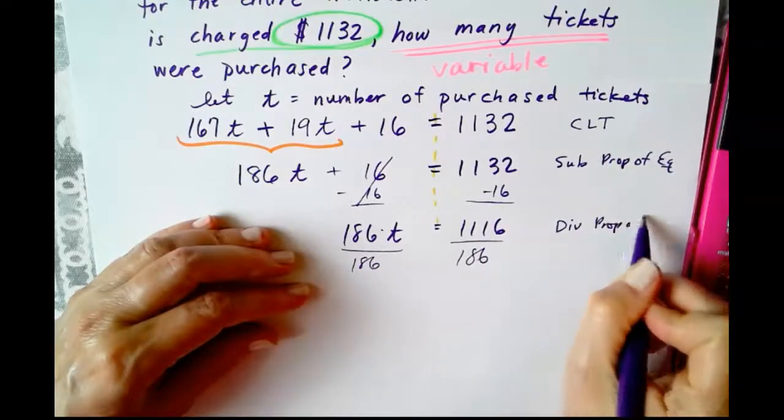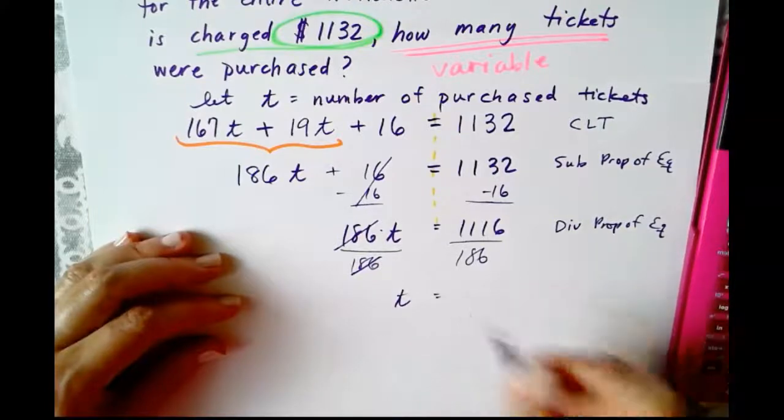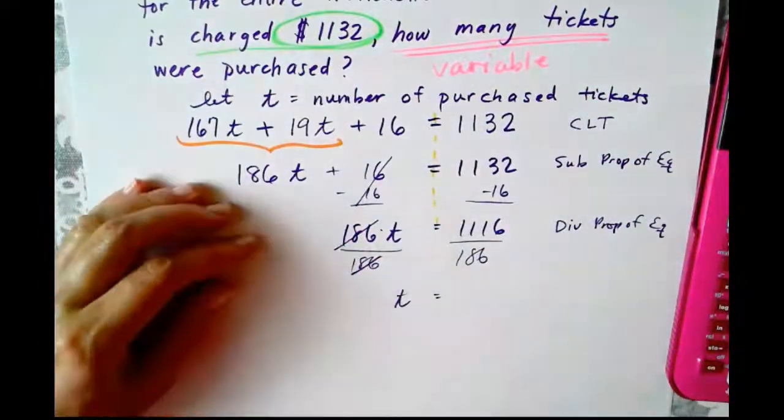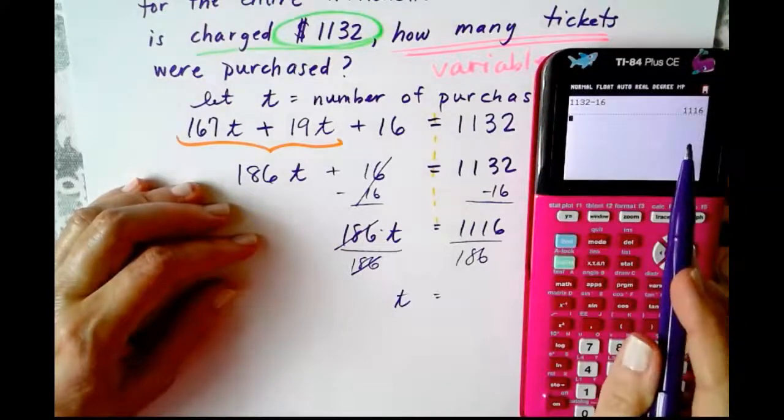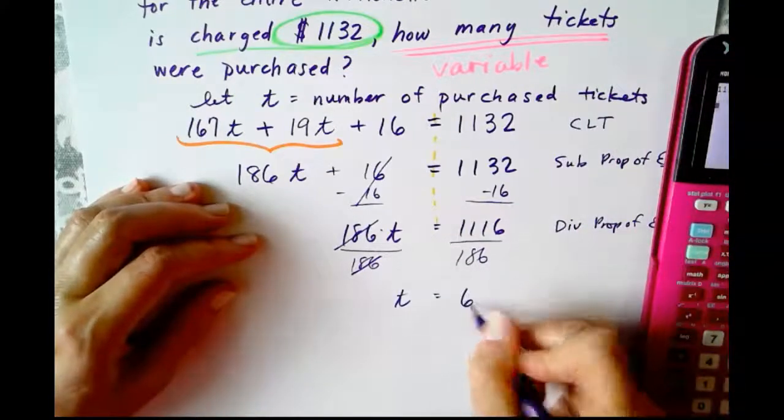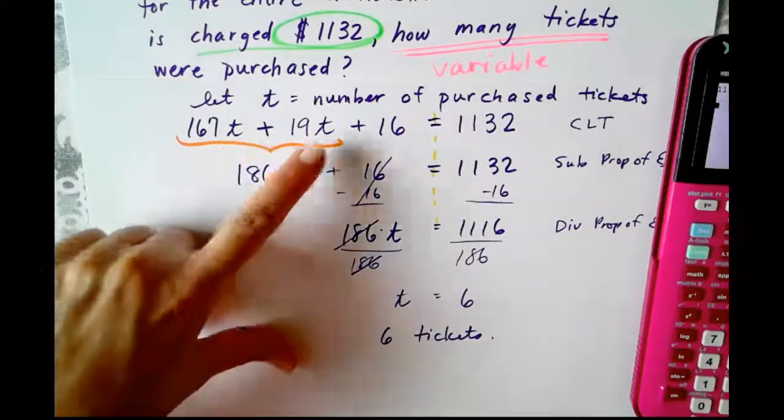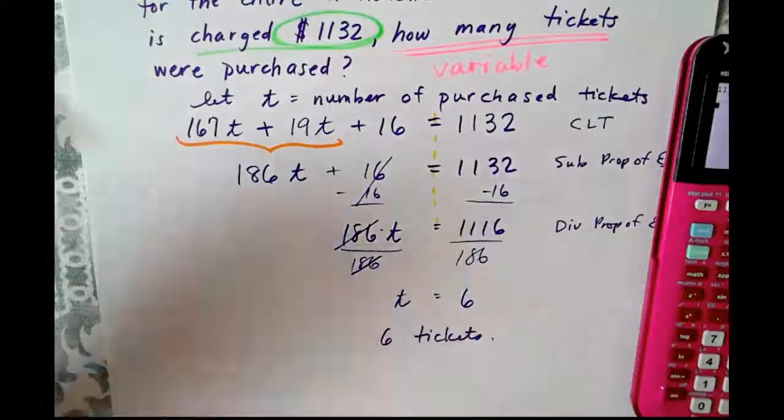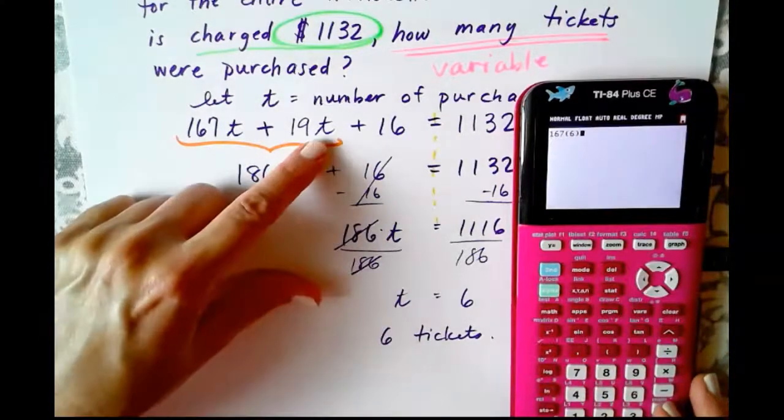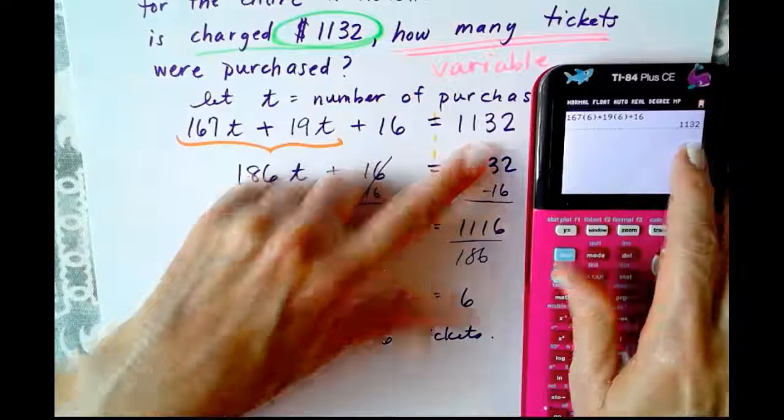And then next, we're going to undo the 186 times T by dividing both sides by 186. And of course, that is the division property of equality. We're justifying each step here. 186 divided by 186 is 1. They cancel. And we finally have our T by ourselves. Remember, T represents the number of purchased tickets. How many tickets purchased? That's what we're after. So let's finish off by dividing 1,116 divided by 186. That comes out to six tickets. So this family purchased six tickets. Now we can give this a quick check just by taking that six and plugging it in and being certain that we get 1,132. So we'll do that on the calculator to save a little time here. So 167 times 6, plus 19 times 6 plus 16 should equal 1,132. And it does. So it checks. And we're done.